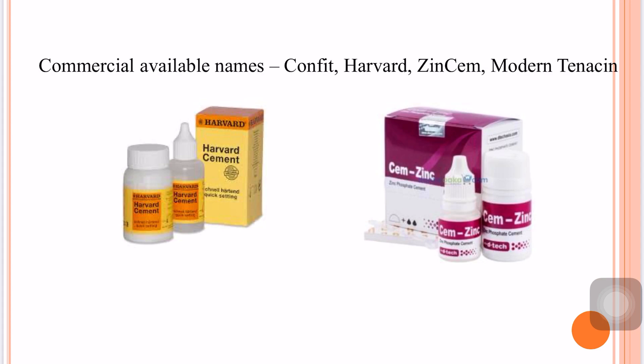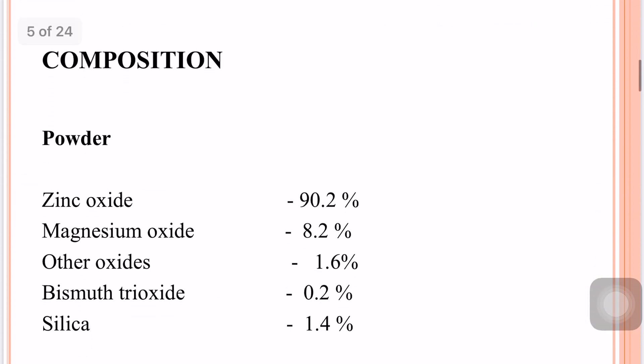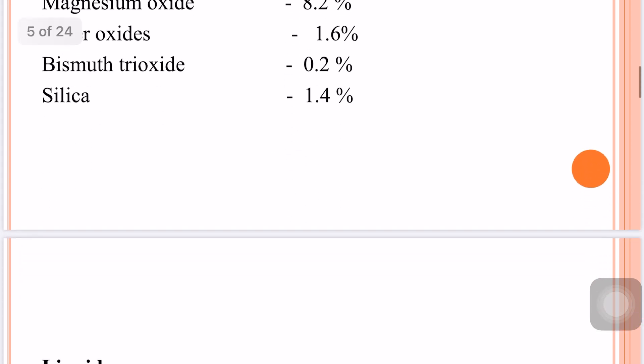The commercially available names of zinc phosphate cement in the market are Confit, Harvard Zinc Cement, and Modern Tena Cement. The composition mainly consists of powder and liquid. The powder consists of zinc oxide as the major ingredient at 90%, magnesium oxide at about 8.2%, bismuth trioxide at 0.2%, silica at 1.4%, and other oxides at 1.6%.